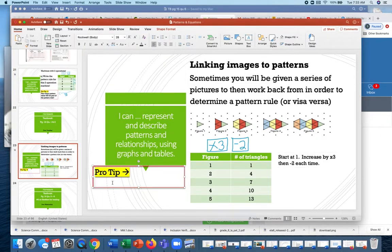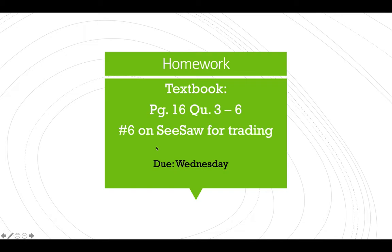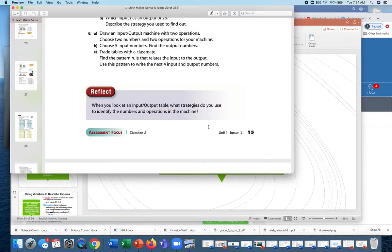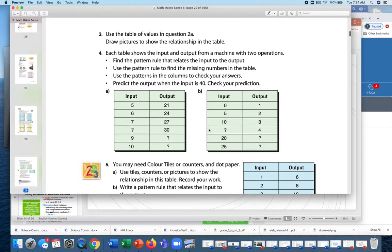Pro tip: create a table of values to represent the series of images — in this case pictures, but sometimes it could be symbols or something else. That's it for what you have to learn today. For homework, it is page 15, questions 3 to 6, with number 6 on Seesaw.